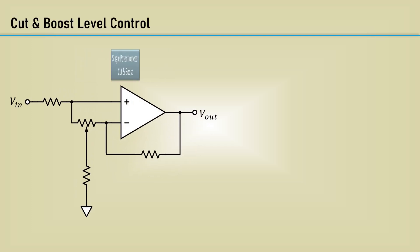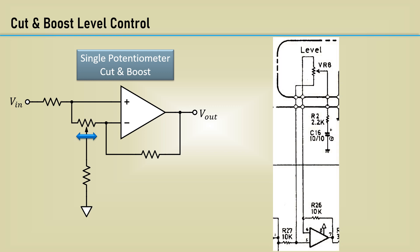Let's start with the overall level control. This is the circuit we used in the cut-boost level control video. Here are the components used in the GE7. Since the GE7 is a single power supply design, the resistor to ground has a DC block, in this case, C16.